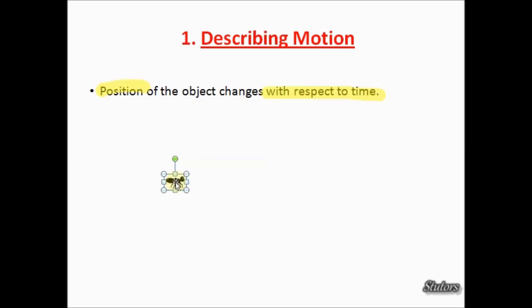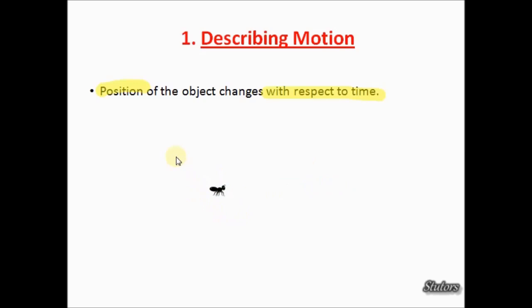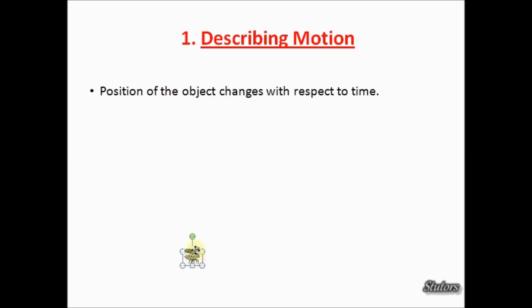Imagine an ant — you find that its position after a few seconds is somewhere different, then you can say that the ant has moved. Now imagine that this ant was in a large field where there is nothing around. You may find it difficult to understand its motion when it's too small on a very large field; you will find it difficult to mark the initial and final positions of this ant.